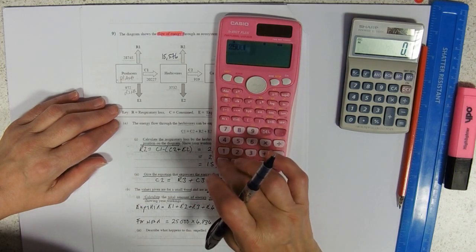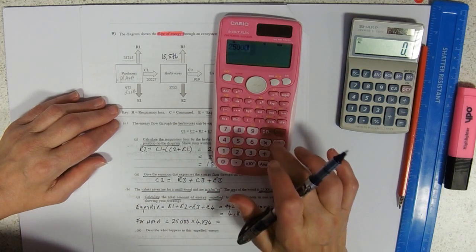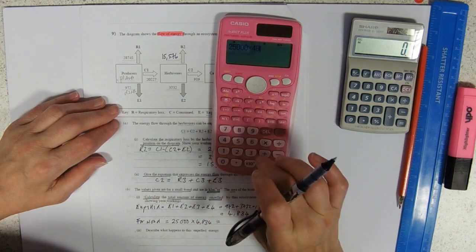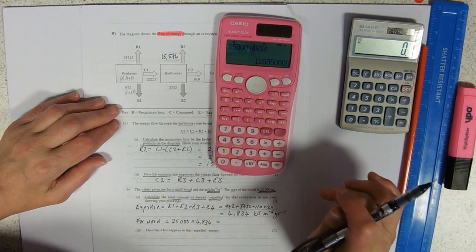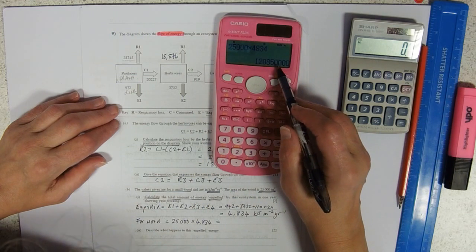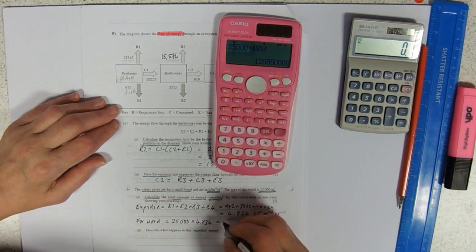So 25,000 times 4,834 equals huge number. That's better. So that's 120 million, 850,000. Fantastic.